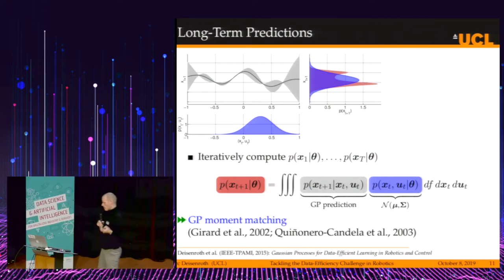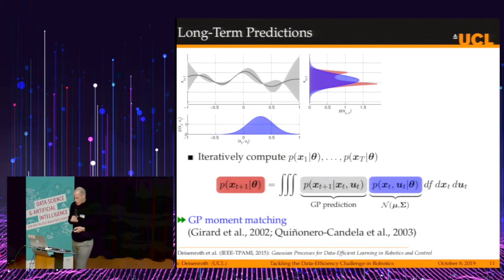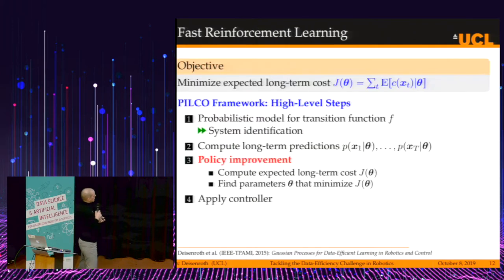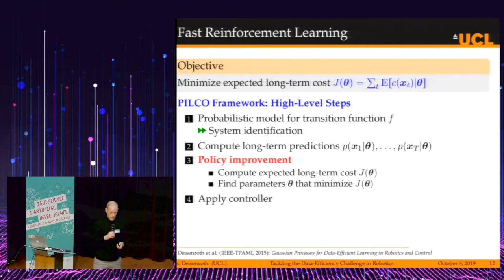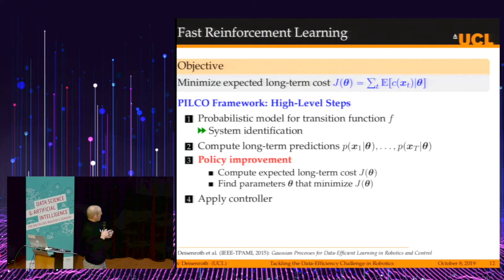This allows us to propagate the state over time and compute the evolution of the state for a given controller parameterization. Coming to the next point — improving the policy — it consists of two steps: computing the expected long-term cost, and then finding the parameters that minimize this cost.